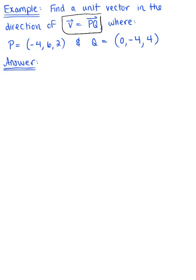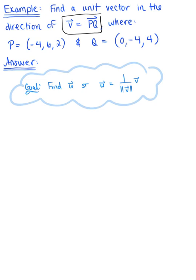The ultimate goal here is to find a unit vector in the direction of v. In other words, we want to find some vector u, such that vector u is defined as 1 over the magnitude of vector v, multiplied by vector v. So in order to do this, we need the components of vector v. Let's find v to get us started.